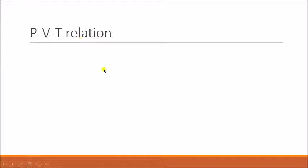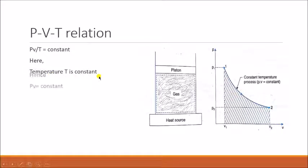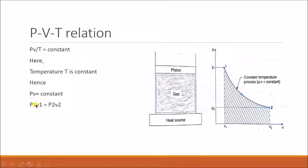The general equation is PV divided by T equals constant. In this process the temperature T is constant, so its value does not change throughout the process — its effective contribution becomes 1. Hence the equation simplifies to PV equals constant, which can also be written as P1V1 equals P2V2. This is the PV relation during the isothermal process. Since T is constant, only pressure and volume are the variables.